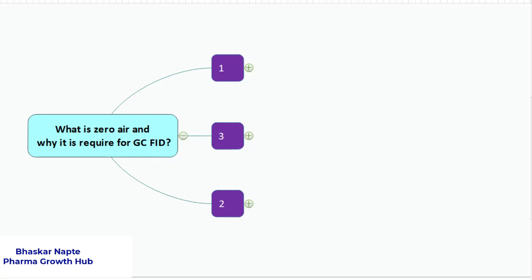Hello and welcome. This is Bhaskar Naptev from Pharma Growth Hub. In today's video we are going to talk about a very important question related to gas chromatography. For gas chromatography, if you are using flame ionization detector, then you must have used hydrogen as a fuel and air as a combustion gas.